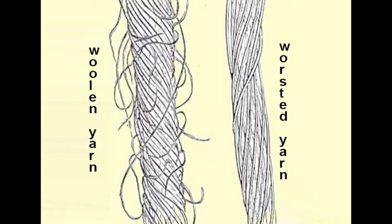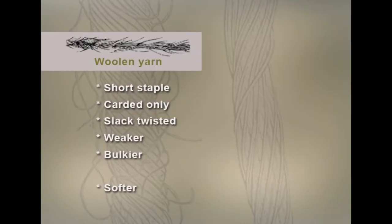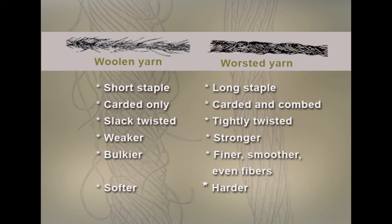When we see the differences between worsted yarn and woolen yarn: in woolen yarn, short staple fibers are carded only, with a very slack twist, and they are weaker, bulkier, and softer. These are used for woolen yarns. Whereas for worsted yarns, the fibers are both carded and combed, giving proper alignment with very parallel and long fibers, with a highly twisted yarn. Because of naturally longer fibers and high twist, worsted yarns are stronger, finer, smoother, and can be given a hard twist.